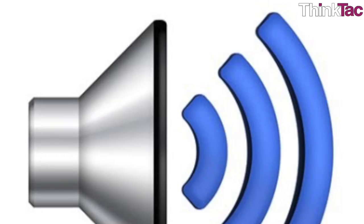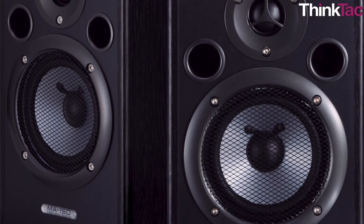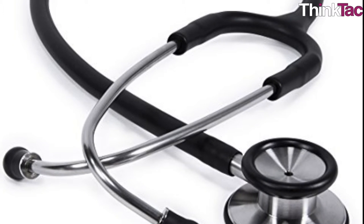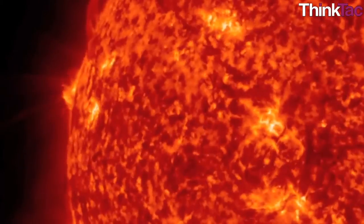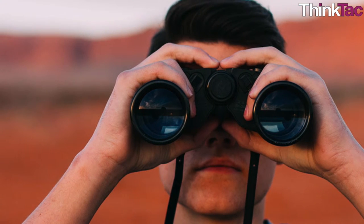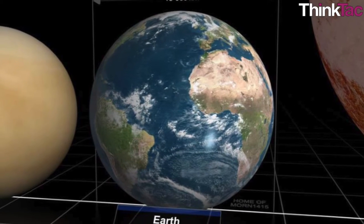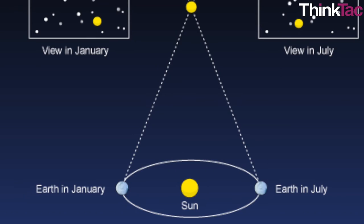Just as we use binocular vision for sight, for sound we use stereo or binaural systems — for example, two speakers, two earphones, stethoscopes, etc. The STEREO satellite is actually a pair of space telescopes launched from Earth in opposing directions to create the most comprehensive 3D image of our own sun. It is using this concept of binocular vision or parallax that measurements were first made of the size of the Earth, the distance between the Earth and the Sun or the Moon, and even the distances of stars.